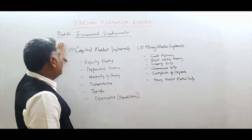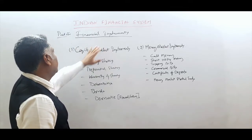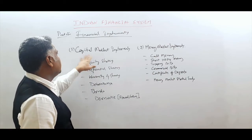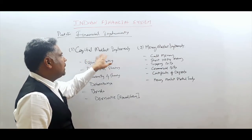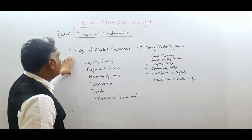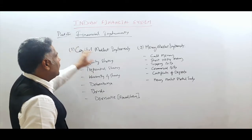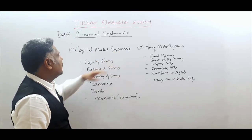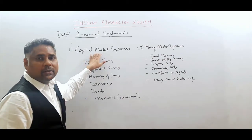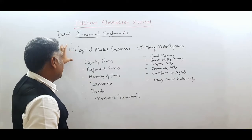The next part, Part 4, we will discuss about financial instruments. Financial instruments are classified into two parts: capital market instruments and money market instruments. To explain what exactly an instrument is — it is a security issued against the finance or capital that a company or individual secures.